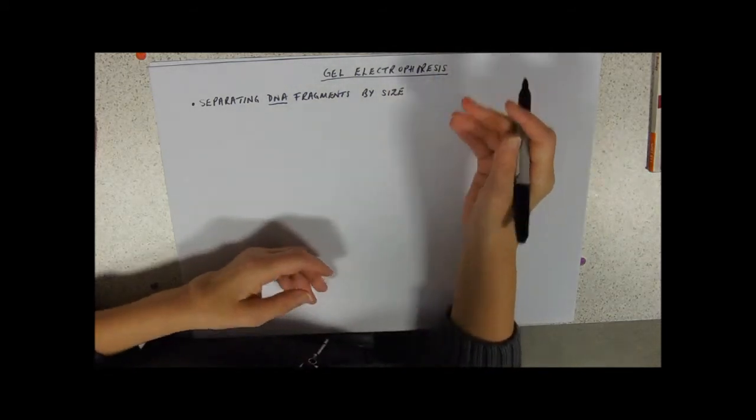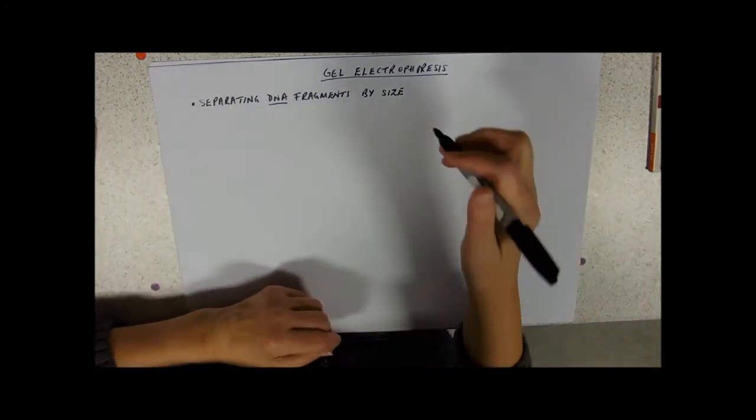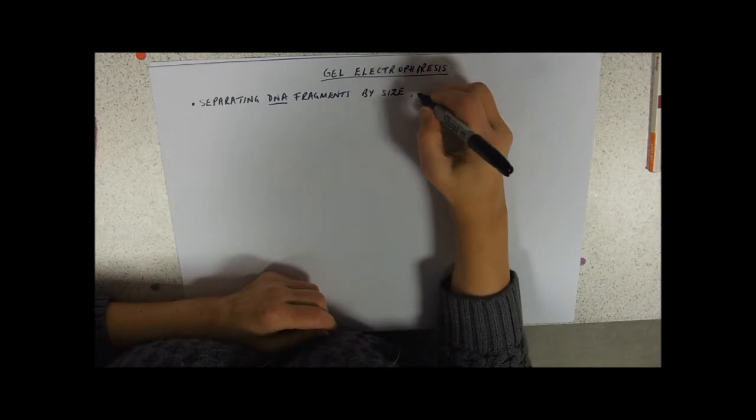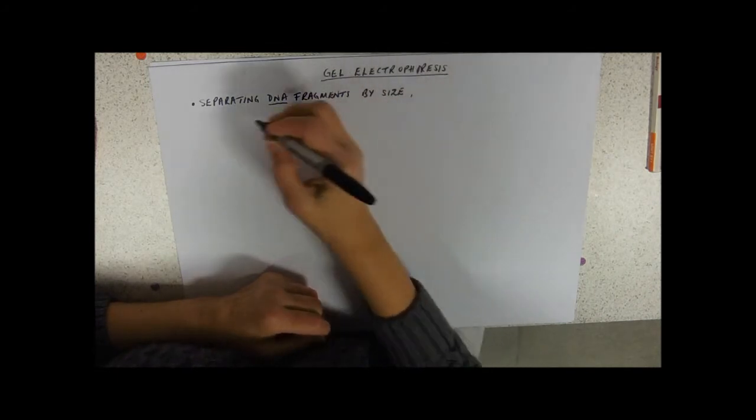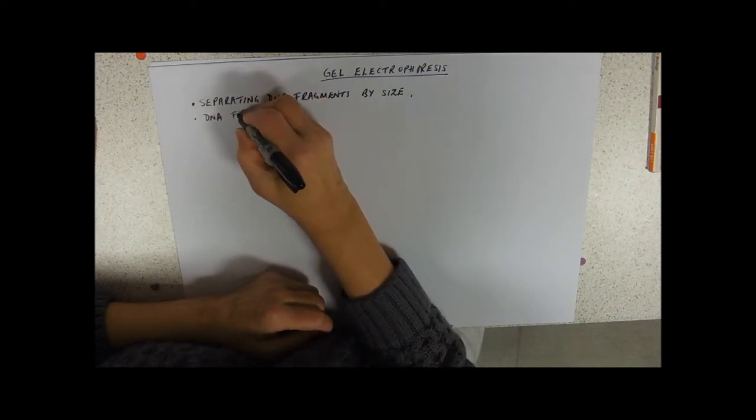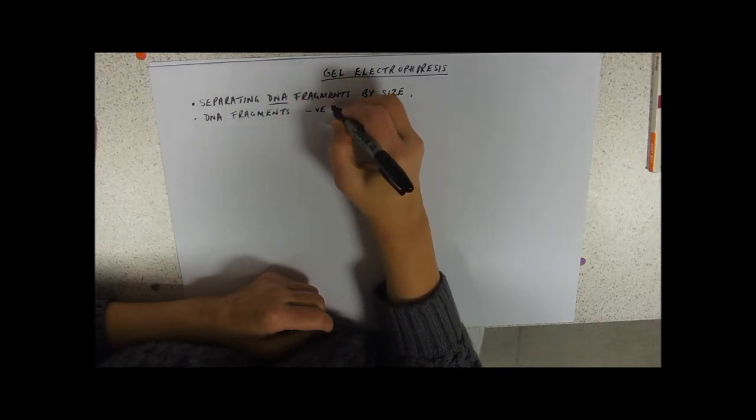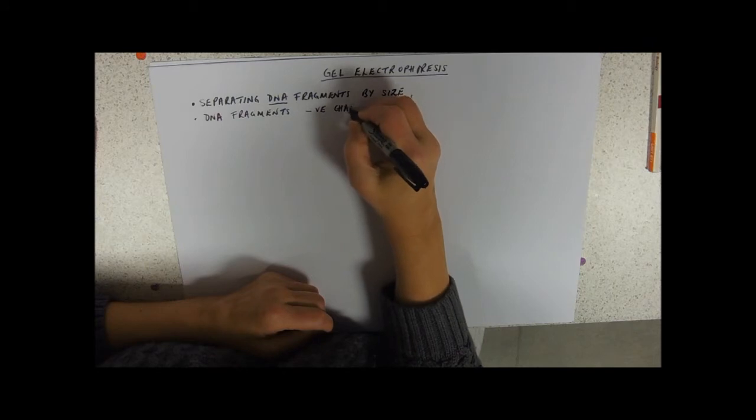Now, if you were separating things with different charges, you'd need to put your stuff in the middle, so it could go in either direction. But this works because DNA fragments have a negative charge. What does that mean? It means they move to a positive electrode.